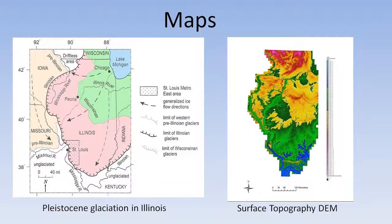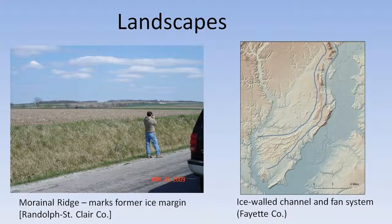The first thing I'm going to show you is the Illinois glaciation boundary. That's the second-to-last glaciation in Illinois, and it advanced southward to Carbondale, St. Louis, and westward into eastern Iowa. It tremendously altered our landscapes. On the left is a moranic ridge formed during that glaciation, and on the right is an ice-wall channel system with a fan that contains the sandy materials we see today.